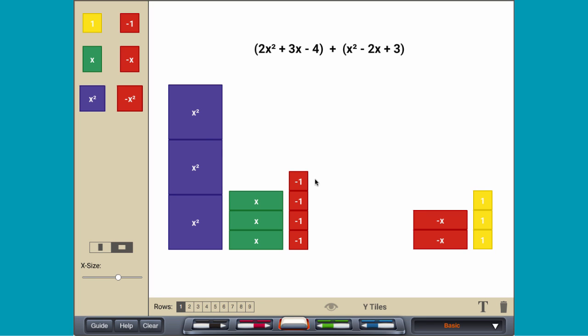Next, create as many zero pairs as possible by combining positive and negative tiles for each group of like terms. The sum when no more zero pairs can be made is 3x squared plus x minus 1.